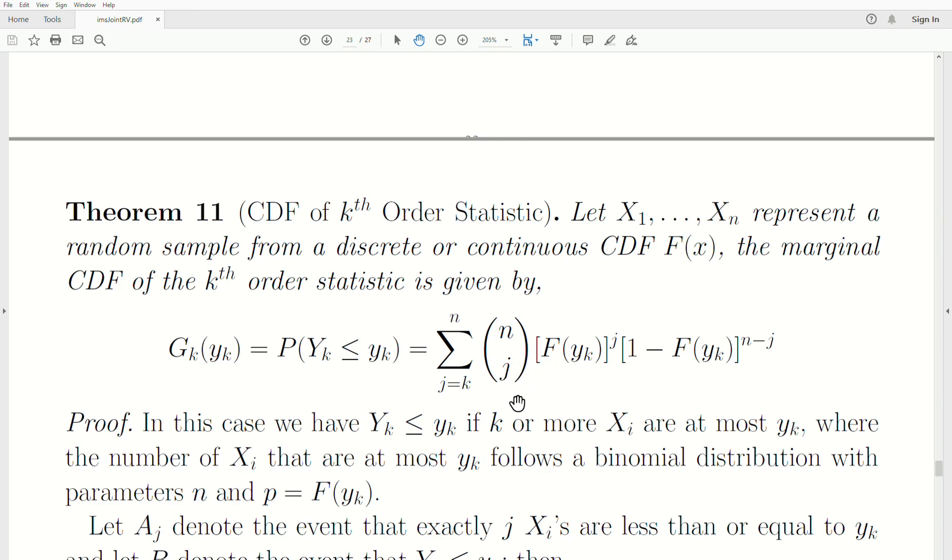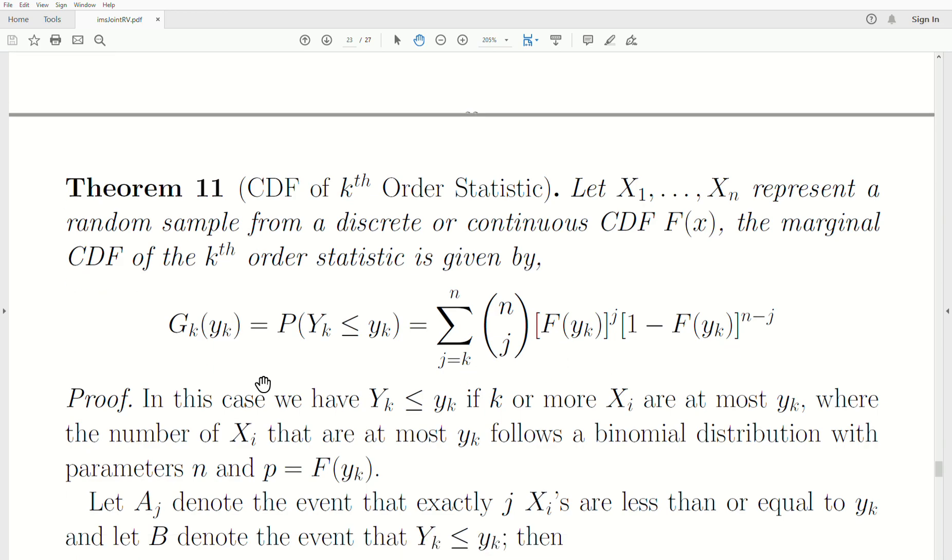Now notice that this looks like a binomial distribution with the parameter p being F of little yk, and it is. So let's prove this, and this is pretty critical in understanding order statistics.